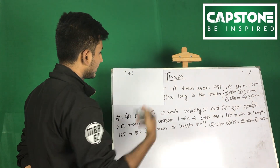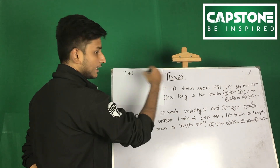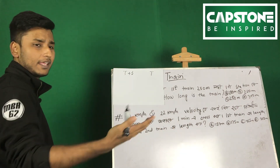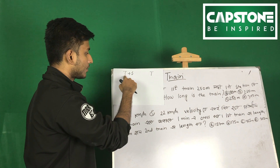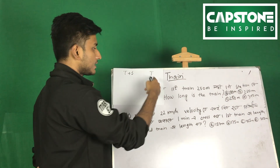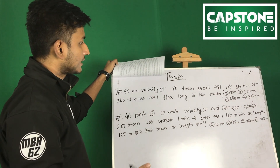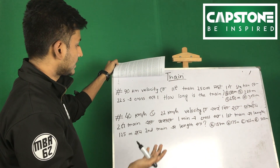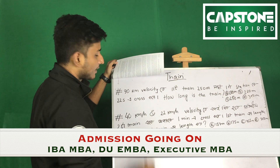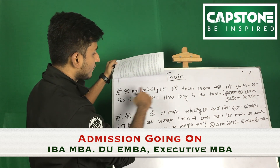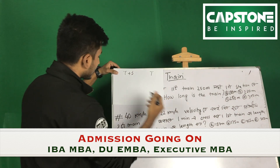When we cross the station, the distance is train length plus station length. If we cross a single pole, we say the train length only. So the station has a station length of 60 meters. We have a velocity of 90 kilometers per hour, so 90 kilometers per hour of velocity.